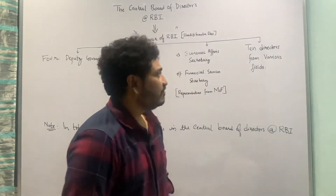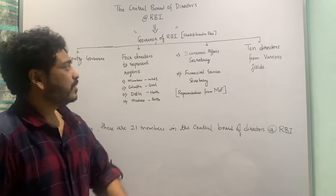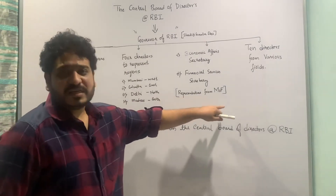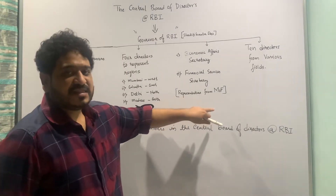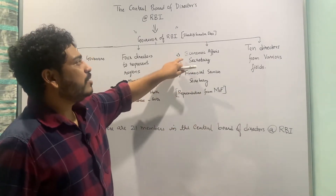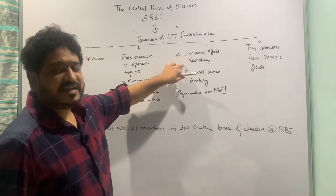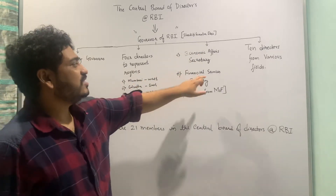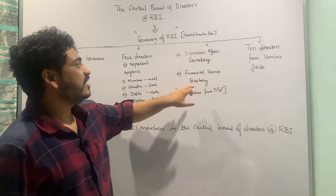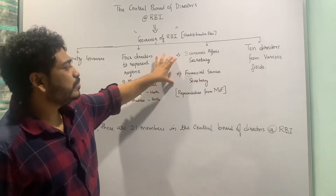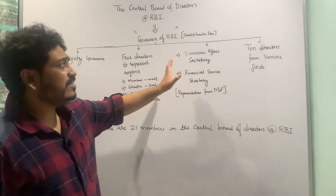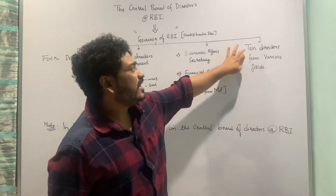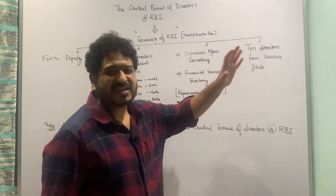Thereafter, we have representatives from the Ministry of Finance. These representatives are the Economic Affairs Secretary and the Financial Services Secretary. So these are two members from the Ministry of Finance, and thereafter we have 10 directors from various fields.